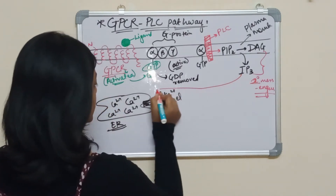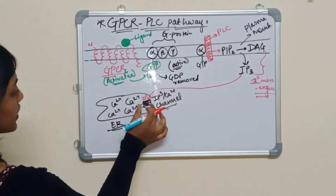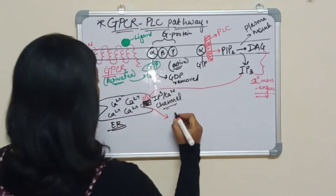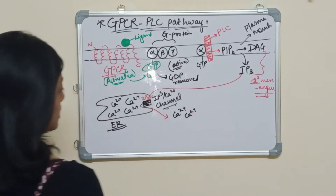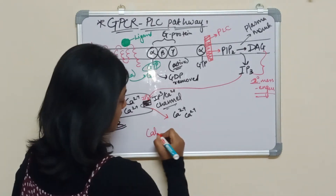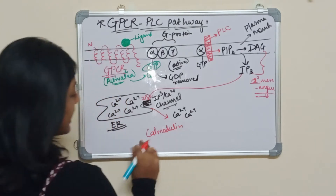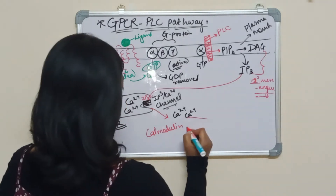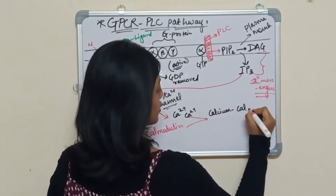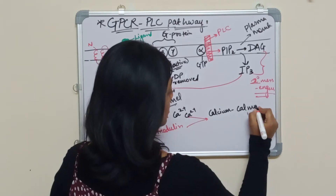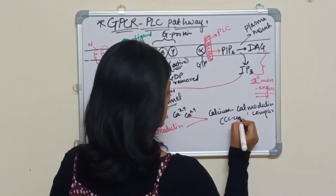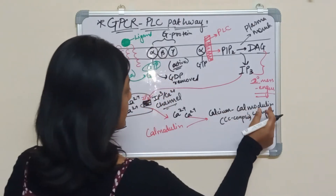IP3 comes and binds to this IP3 calcium channel. This leads to the opening of the channel and calcium ions come out. Once the calcium ions come out, they bind with calmodulin to form the calcium-calmodulin complex, or the CC complex.